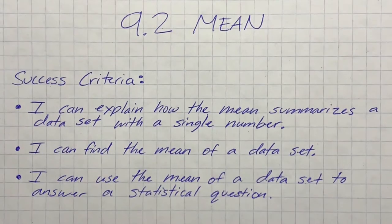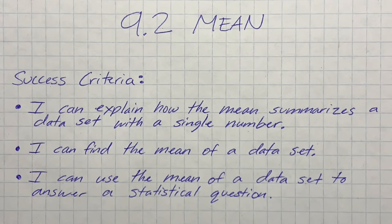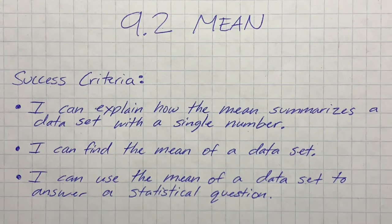Our success criteria for 9.2, the mean: we're going to be able to explain how the mean summarizes a data set with a single number. We're also going to be able to find the mean of a data set. And lastly, we're going to be able to use the mean of a data set to answer a statistical question.